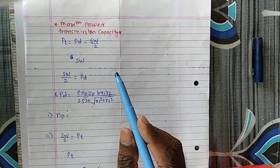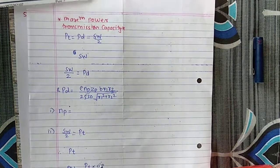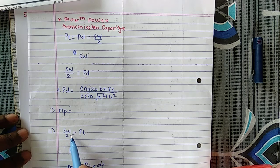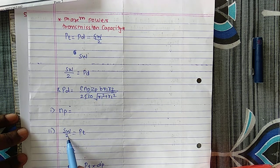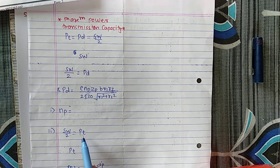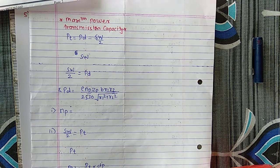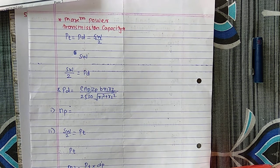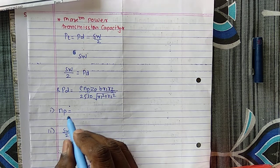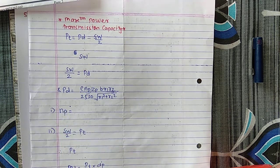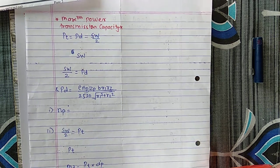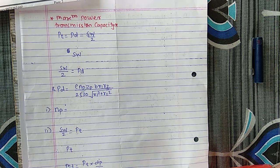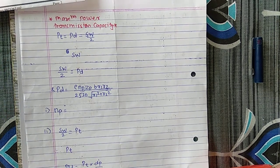For the second objective, I need to find power. Power requires torque, and torque is calculated from PT, where PT = SW/2. Then torque MT = PT × D'P / 2, and power = 2πNP × MT / (60 × 10⁶). The NP calculated in the first objective will be used here. This is the complete flow of the problem.